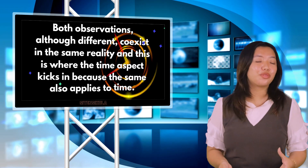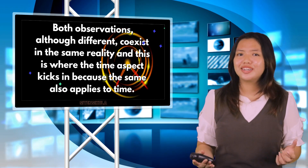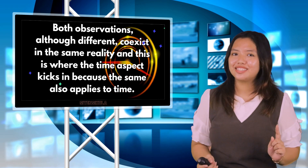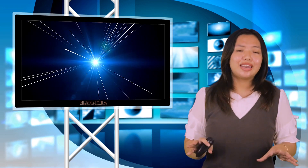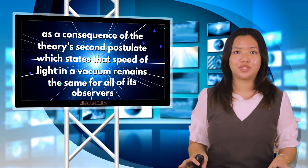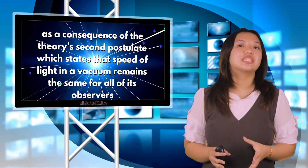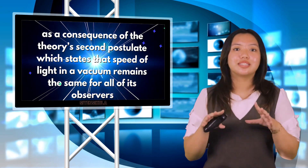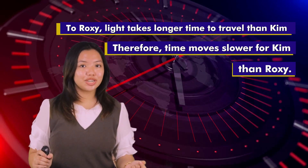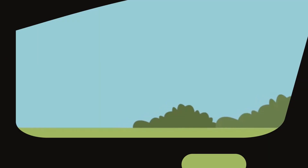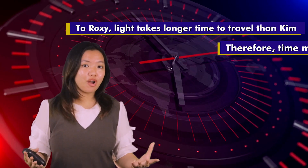Both observations, although different, coexist in the same reality. And this is where the time aspect kicks in, because the same also applies to time. It happens as a consequence of the theory's second postulate, which states that the speed of light in a vacuum remains the same for all of its observers. To Roxy, light takes a longer time to travel than to Kim. Therefore, time moves slower for Kim than for Roxy.